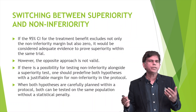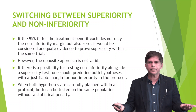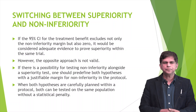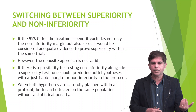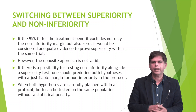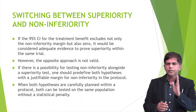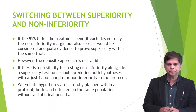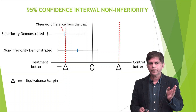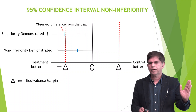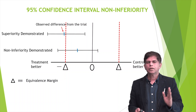When switching between superiority and non-inferiority — in a superiority trial, one treatment is much better than the other. The 95% confidence interval for the treatment benefit excludes not only the non-inferiority margin but also zero, just like shown in our graph. That would be considered adequate evidence to prove superiority within the same trial. The equivalence margin is crossed clearly, and the interval is not touching zero — that's where superiority is demonstrated.